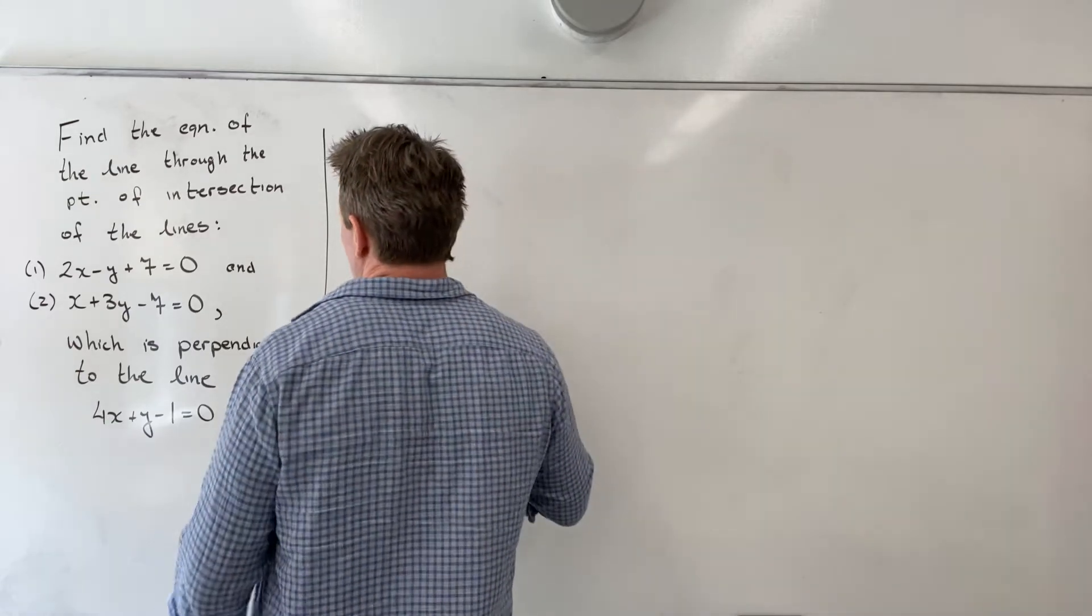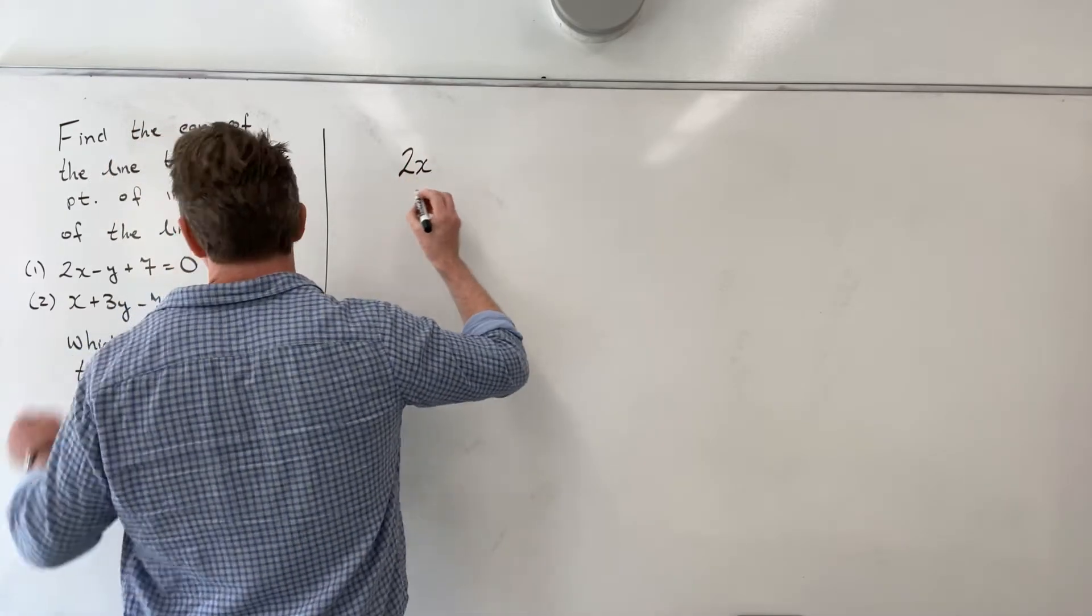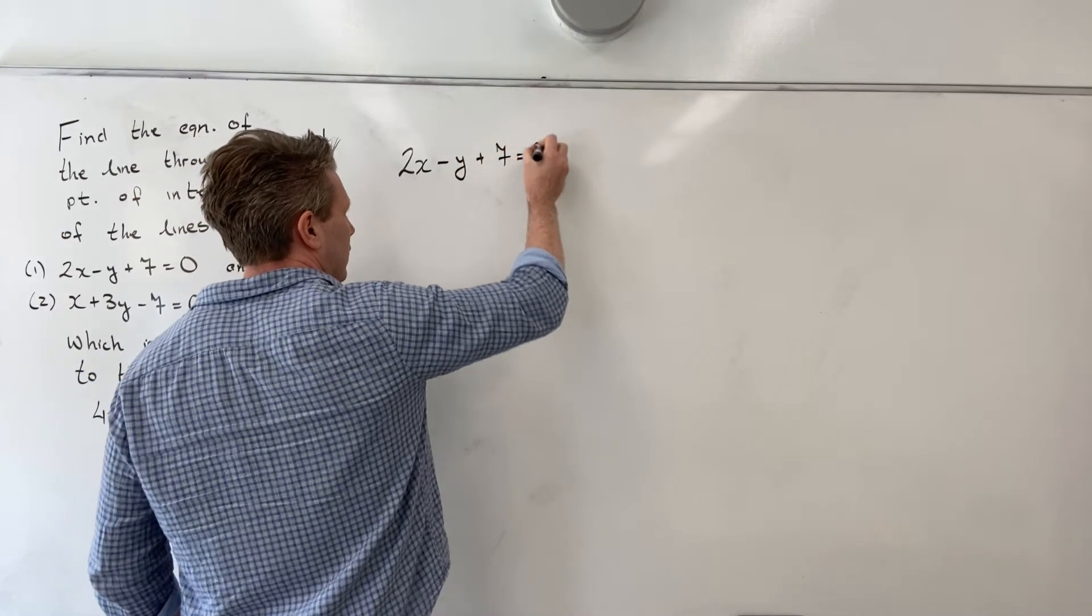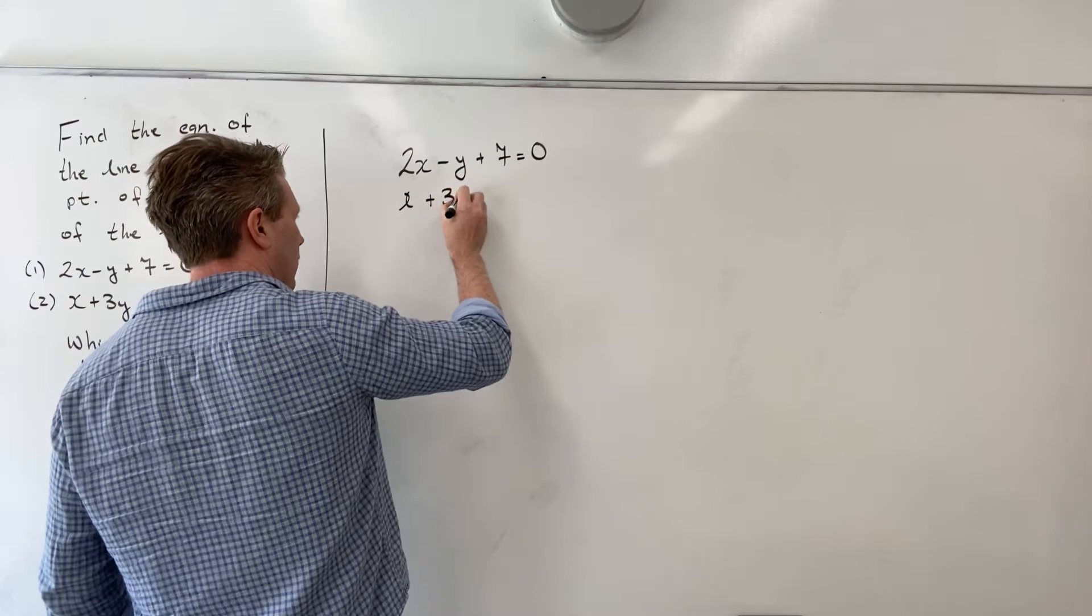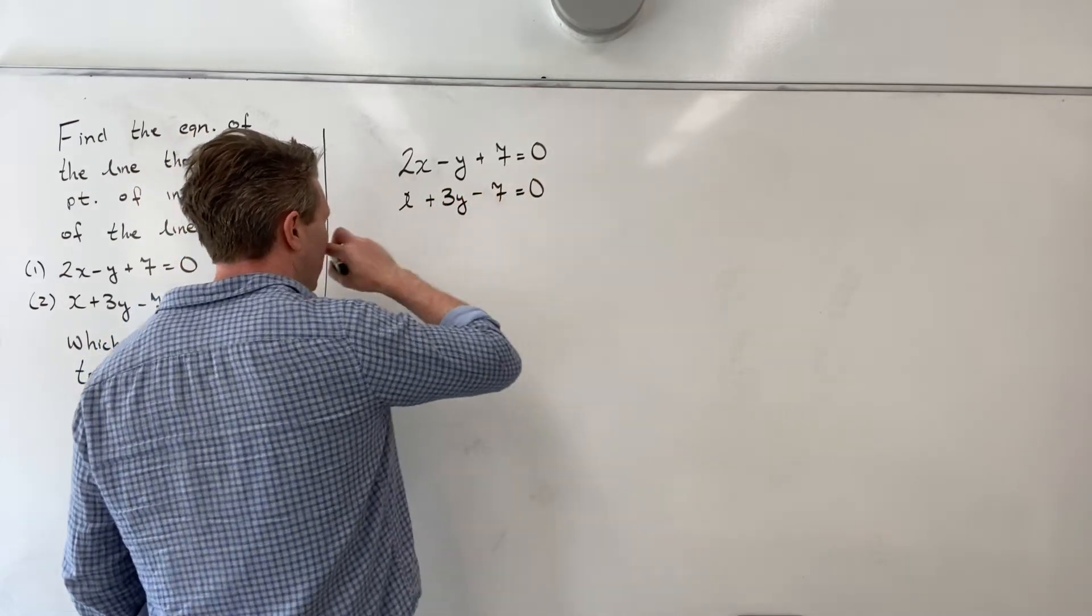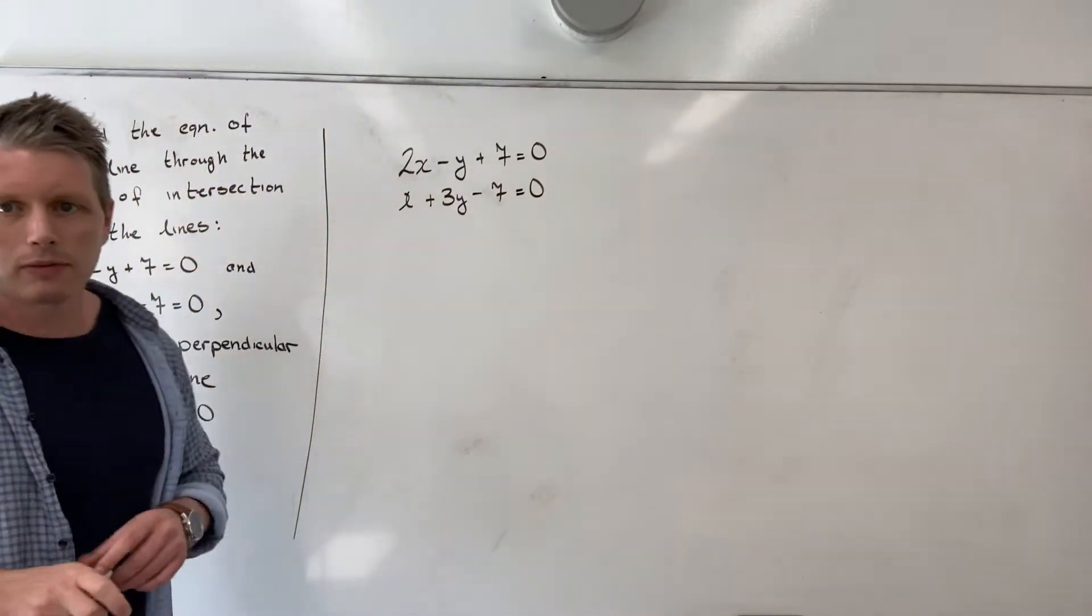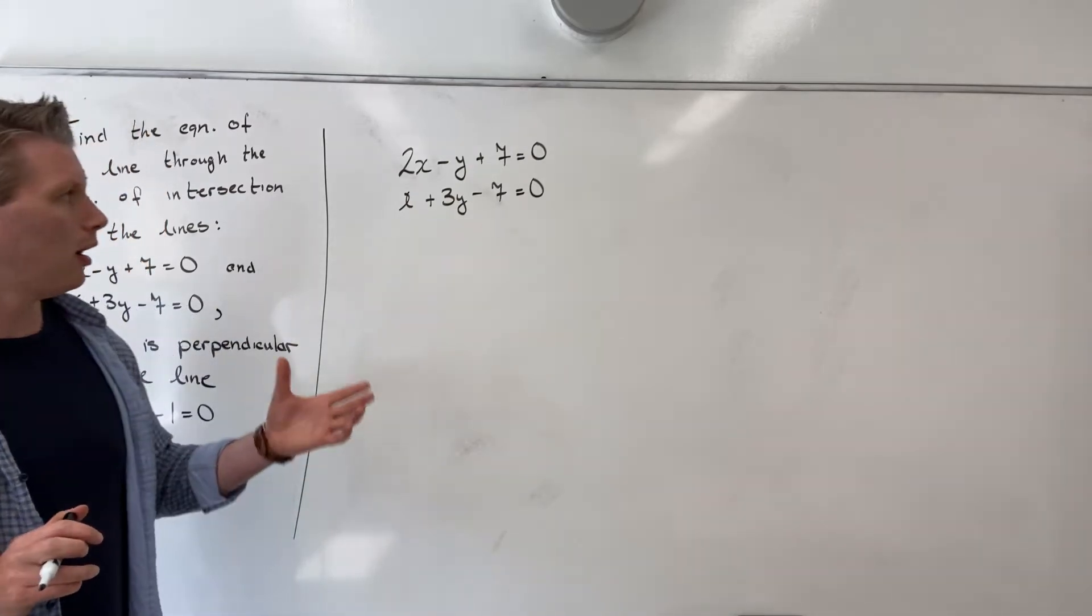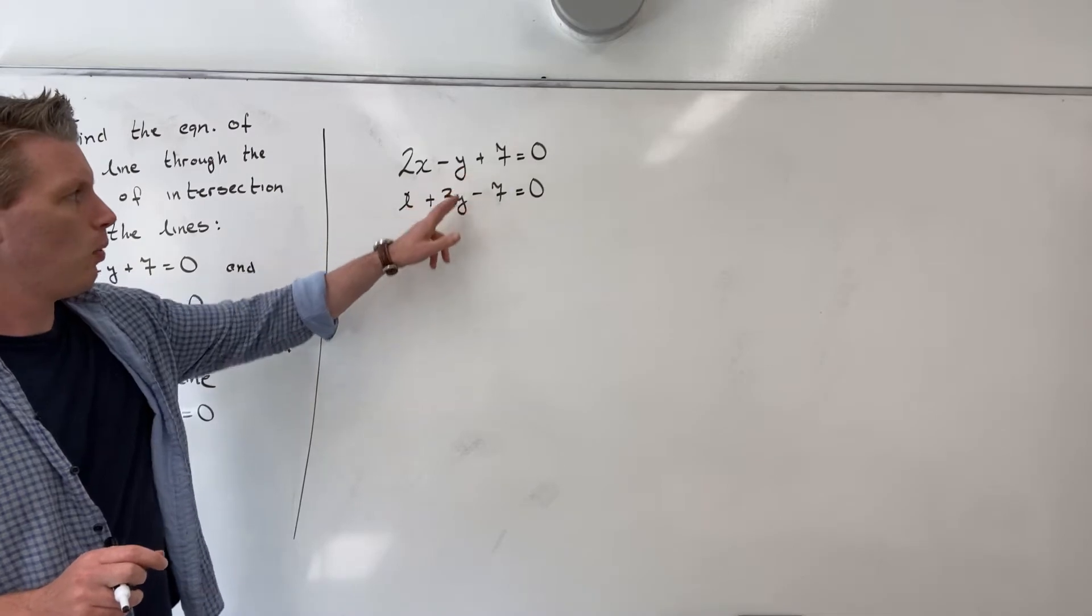So let's start with that. We have the lines 2x minus y plus 7 equals 0 and x plus 3y minus 7 equals 0. I'm going to use the elimination method, which means I'm going to eliminate one of the variables. I think I'll eliminate my y variable.